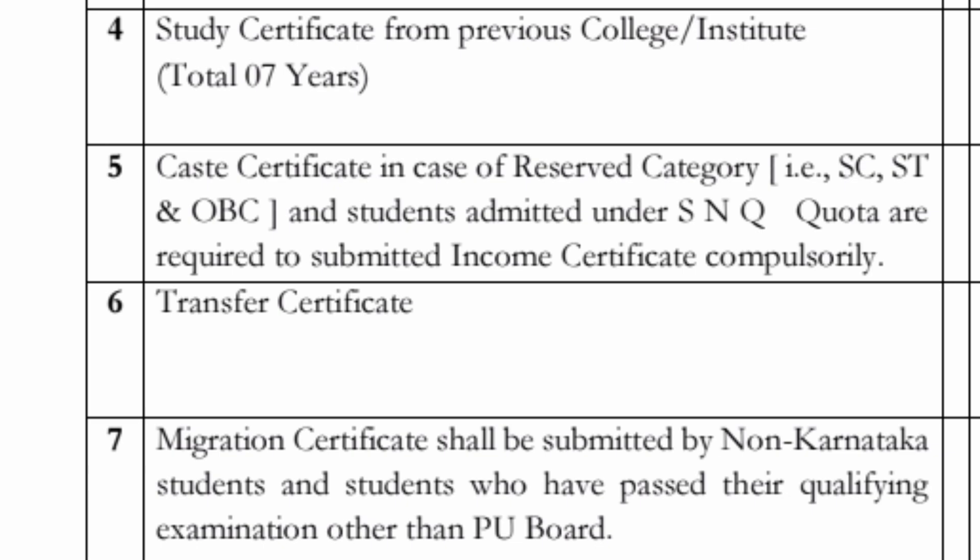Next is for students who are claiming the caste quota. If you are claiming any of SC, ST, OBC, or SNQ, then you have to provide the caste certificate. Students who are quoting SNQ also have to provide the income certificate.